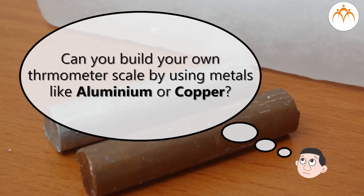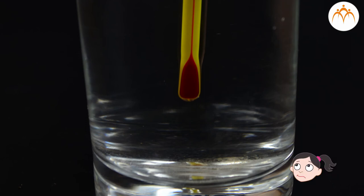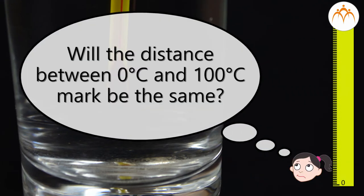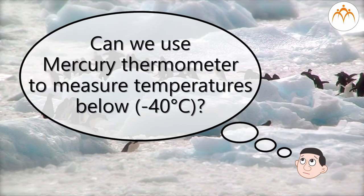Can you build your own thermometer scale using metals like aluminium or copper? If alcohol is used instead of mercury in a thermometer, will the distance between the 0 degrees Celsius and 100 degrees Celsius marks be the same? Can we use a mercury thermometer to measure temperatures below minus 40 degrees Celsius? Discuss with your friends and find out.